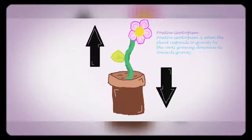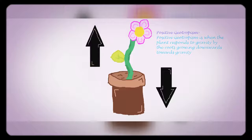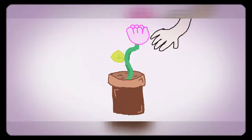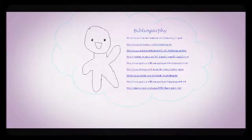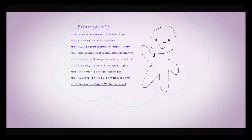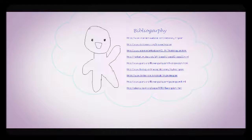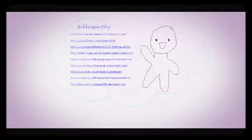The second type of geotropism is positive geotropism. Positive geotropism is when the plants respond to gravity by growing downwards towards gravity.